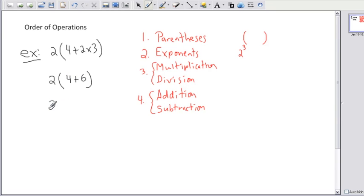Well, 4 plus 6 is 10. So that's 2 times 10 here. Now, I've got a bracket here. I don't need it anymore. I could rewrite it as 2 times 10. That's really what's happening here.